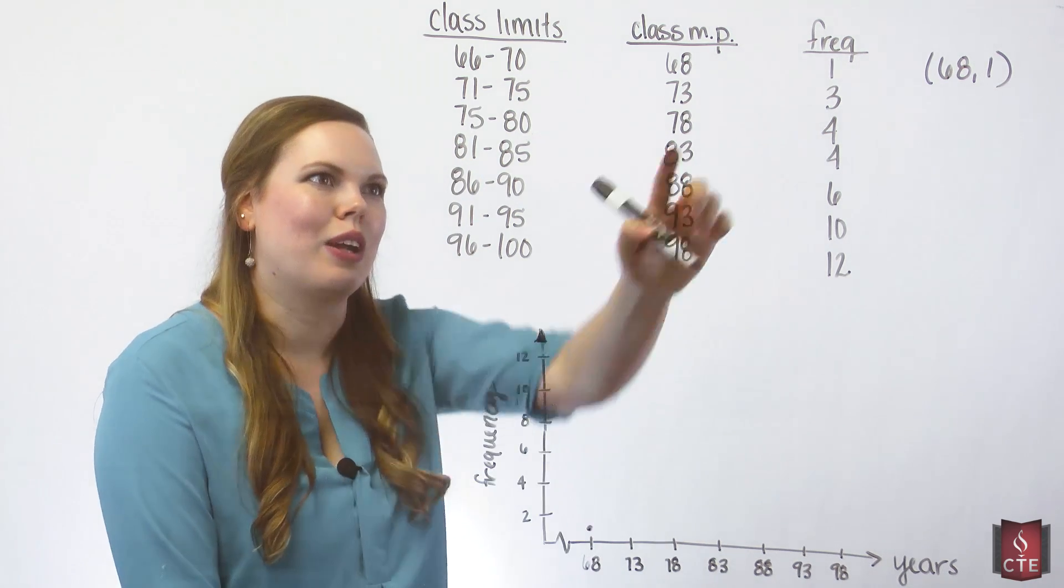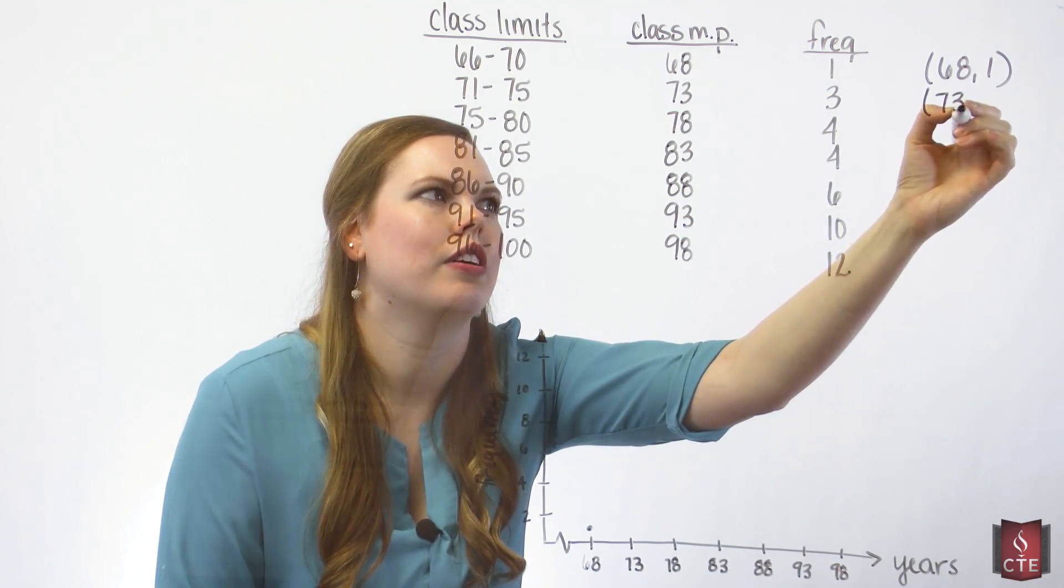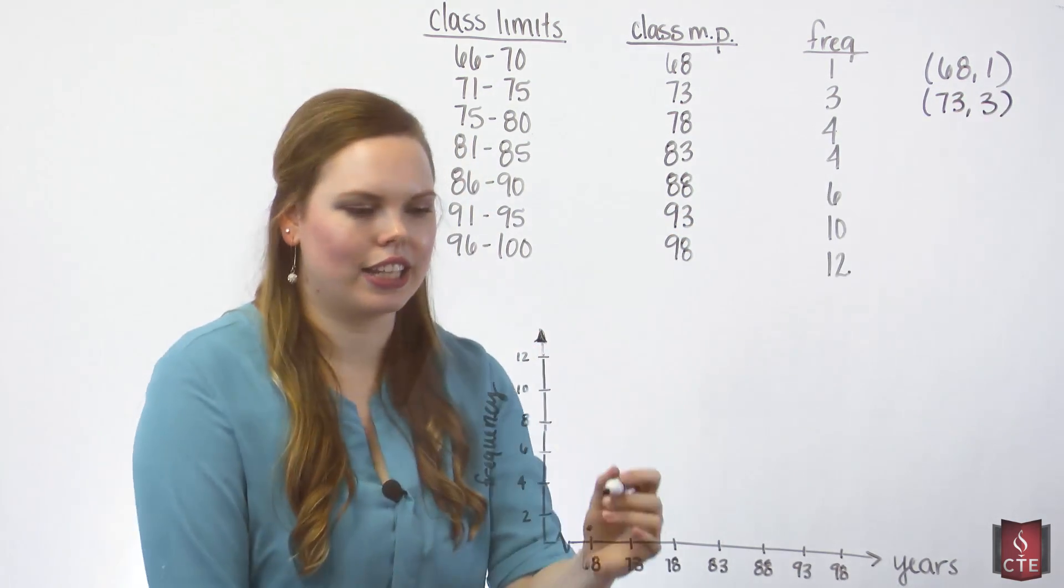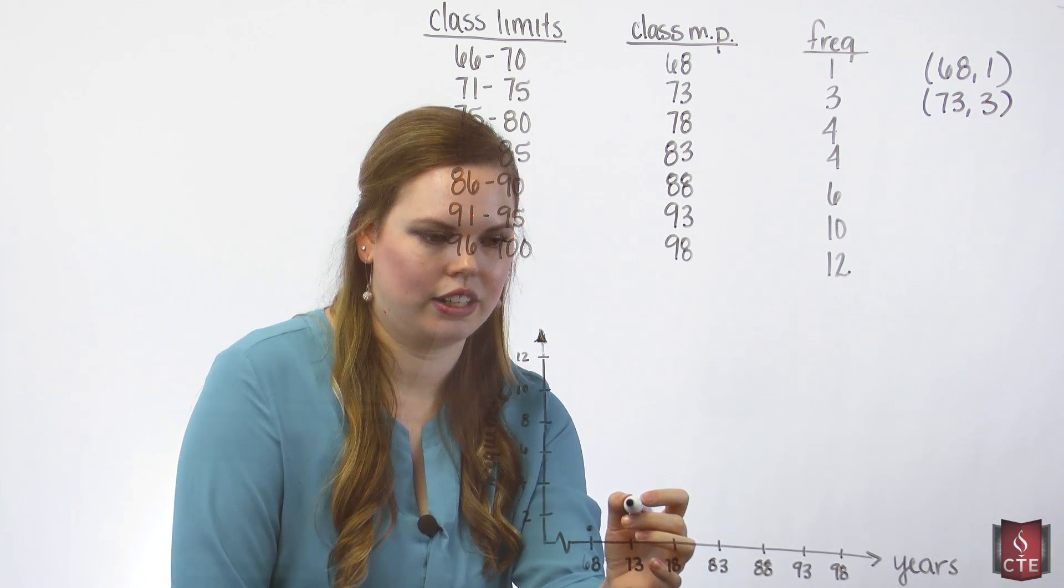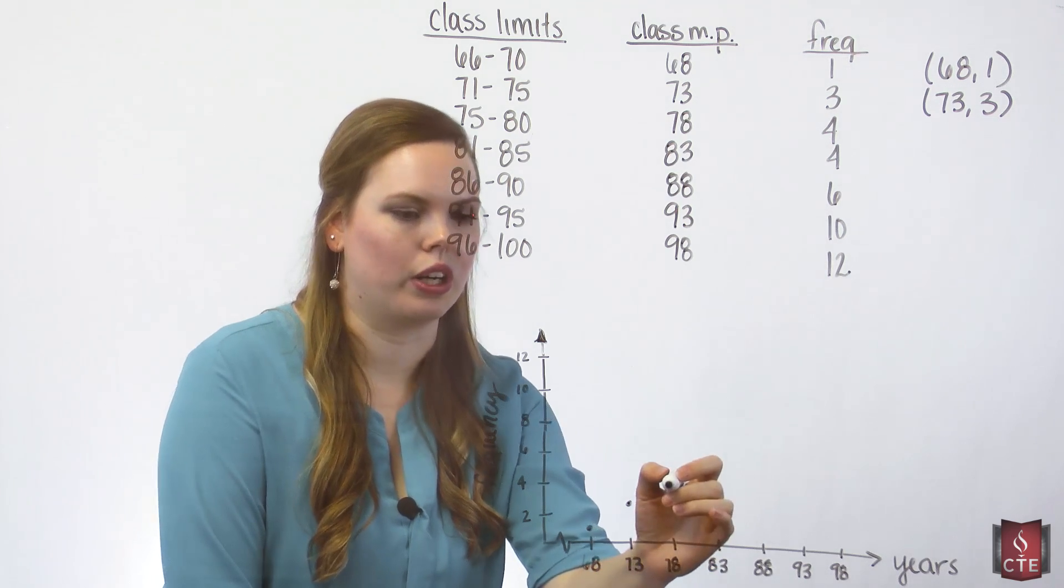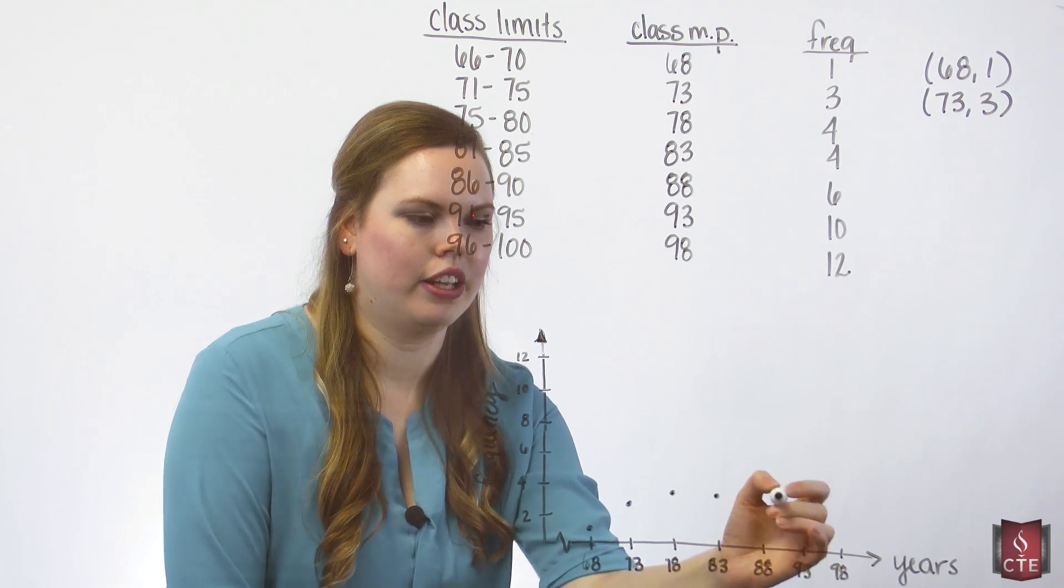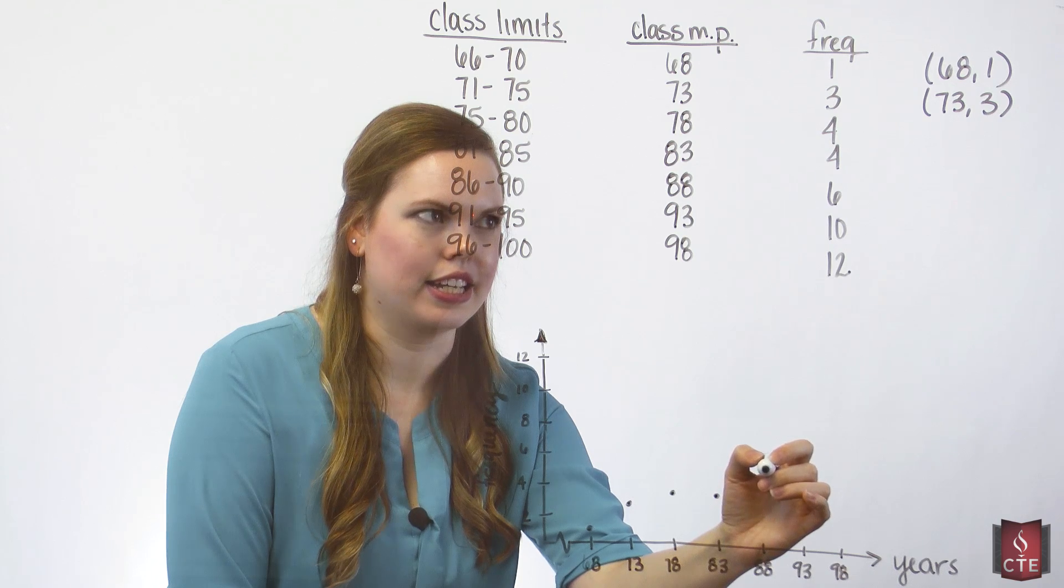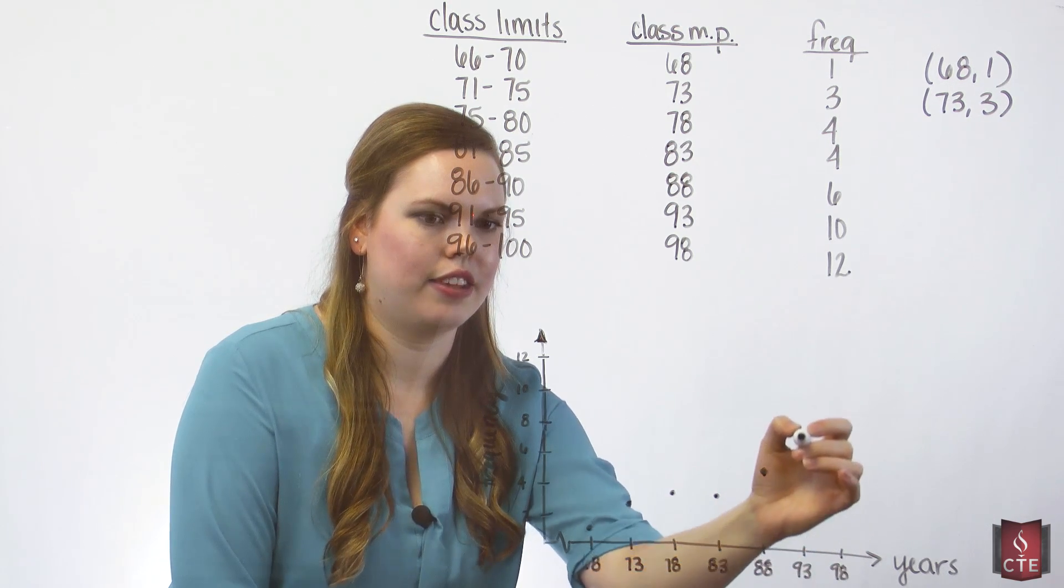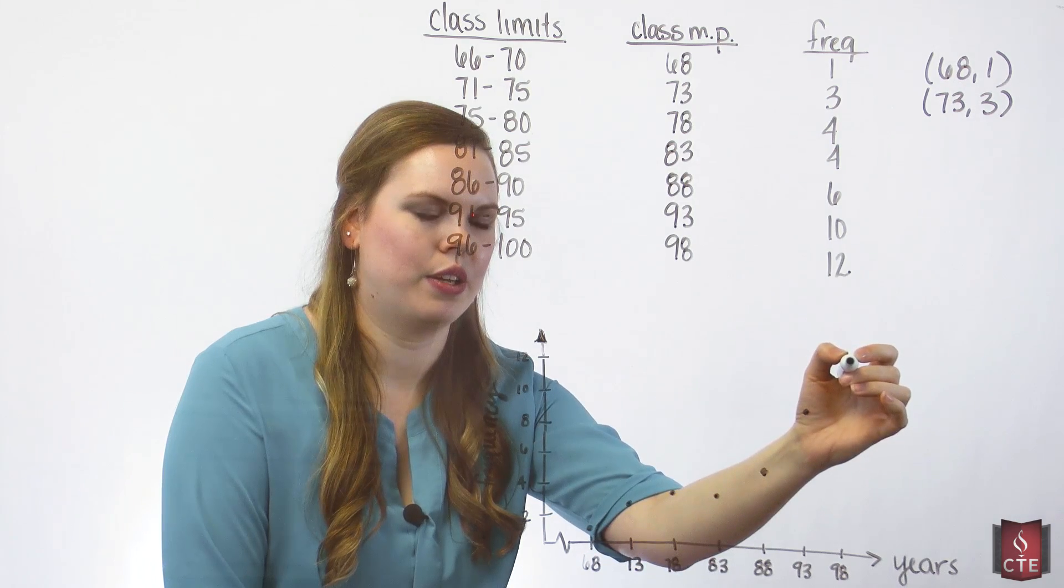And then our next one will be 73, 3. And you can just think of that as you plot these, so it's kind of like a scatter plot or it is a scatter plot. We'll keep going: 78, 4; 83, 4; 88, 6; 93, 10; and then 98, 12.